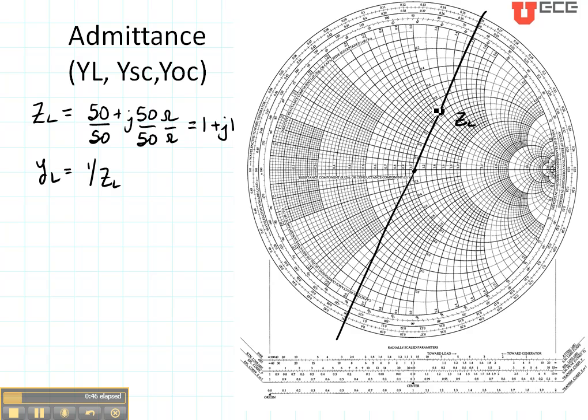And then you mark your distance like so. And you copy that distance right here, starting at the center going to this point right there. This is YL. So you can say it's translating through the center of the Smith chart to the point YL.